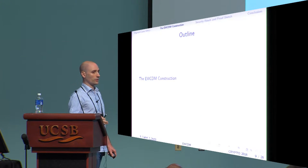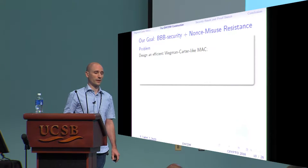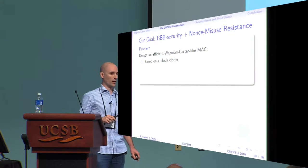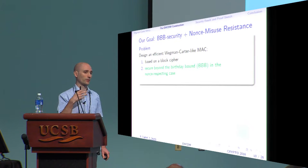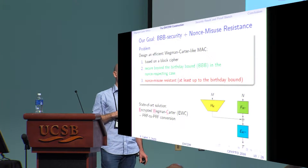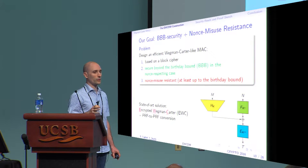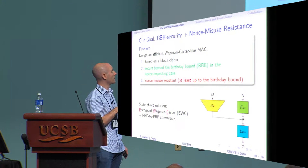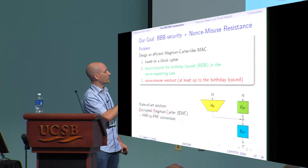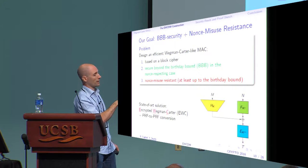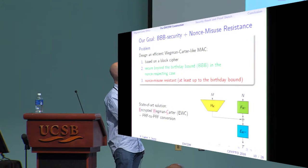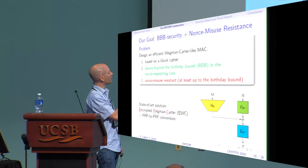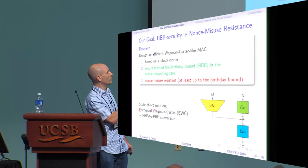We now explain the new construction. The goal is to design an efficient Wegmann-Carter-like MAC based only on a block cipher, which is secure beyond the birthday bound when nonces are not repeated, and which retains nonce misuse resistance at least up to the birthday bound. The starting point is the Encrypted Wegmann-Carter construction — a Wegmann-Carter structure with an extra block cipher call to encrypt the output, avoiding the nonce misuse problem — combined with a PRP-to-PRF conversion method to implement the pseudo-random function.